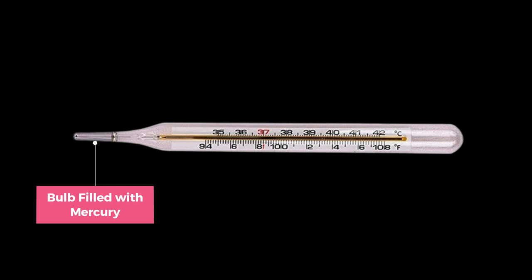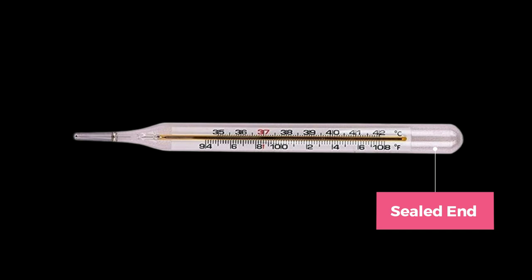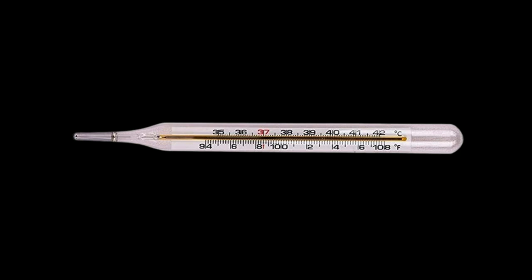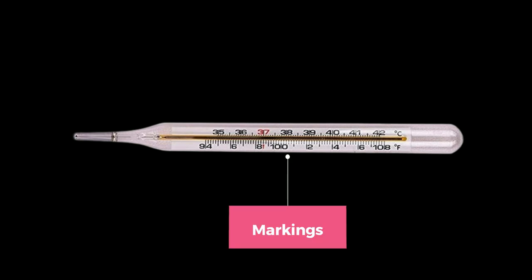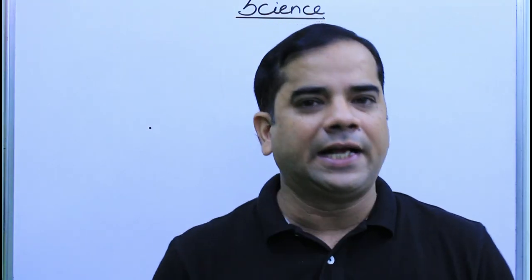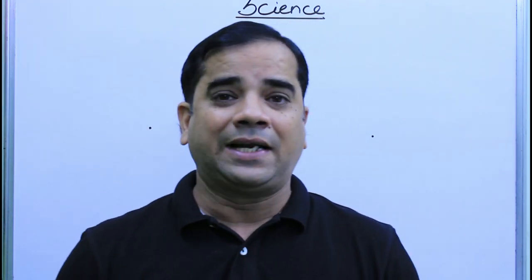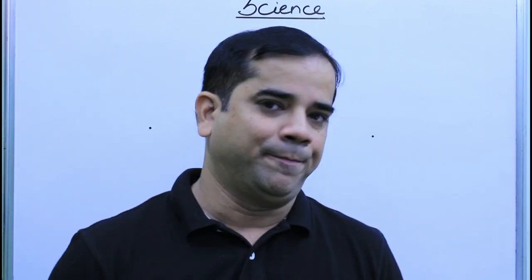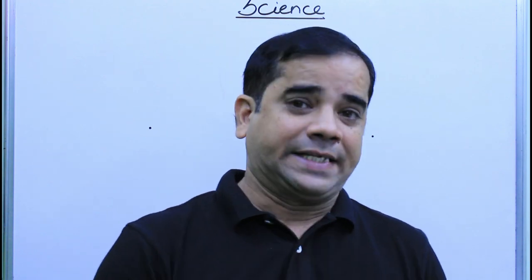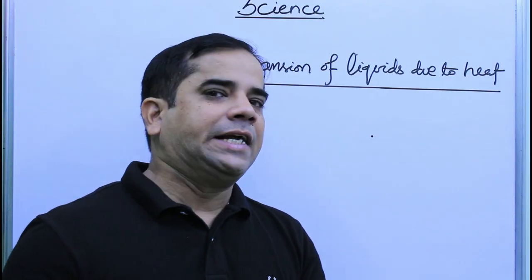One end of the thermometer has a bulb filled with mercury. The other end is sealed after taking out the air. You can see the markings on it, which help us know our body temperature. Remember, not only the clinical thermometer but all other thermometers work on the principle that matter expands on heating. Let us now discuss how expansion happens in liquids.